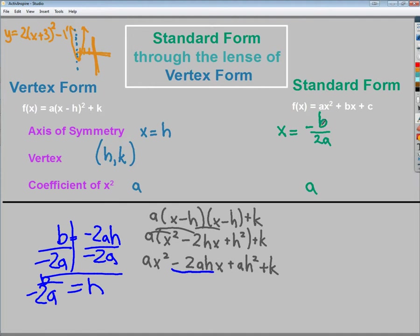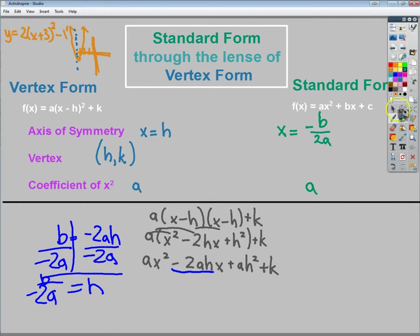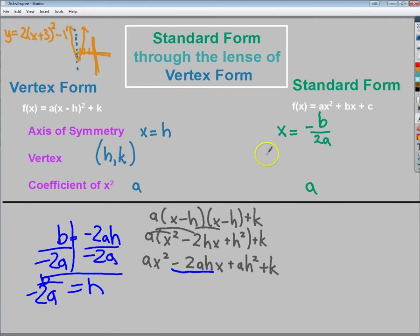So instead of saying that my axis of symmetry is x is equal to h, my new axis of symmetry, once I convert to standard form, is x is equal to negative b over 2a. And that comes from that point right there. From here, I need to figure out what's the vertex. Because there's still a part that I'm missing. The sort of the bummer part of standard form is there really isn't an equivalent to k.